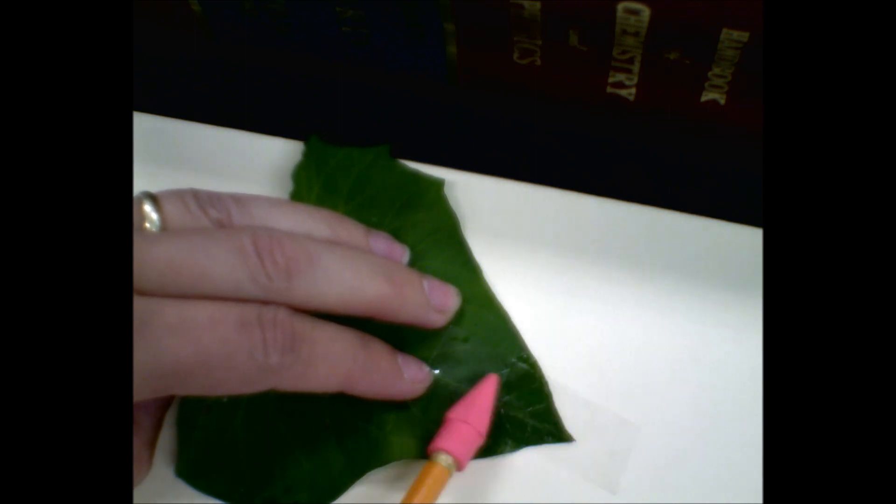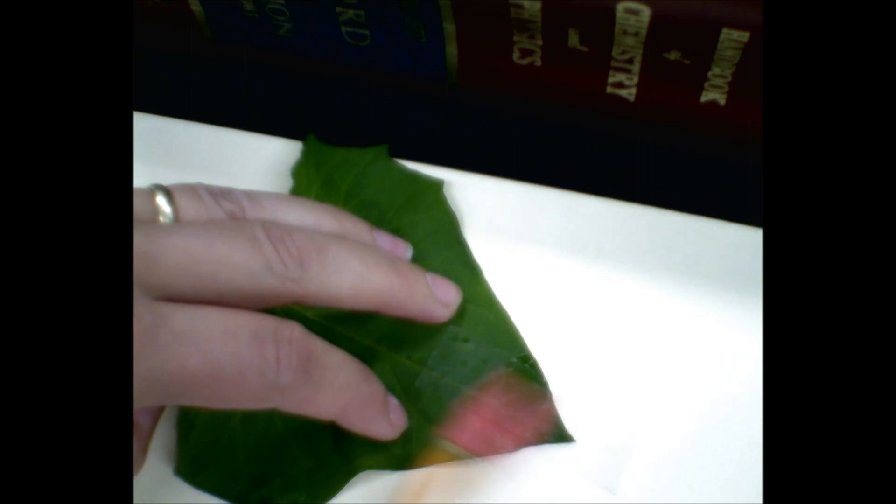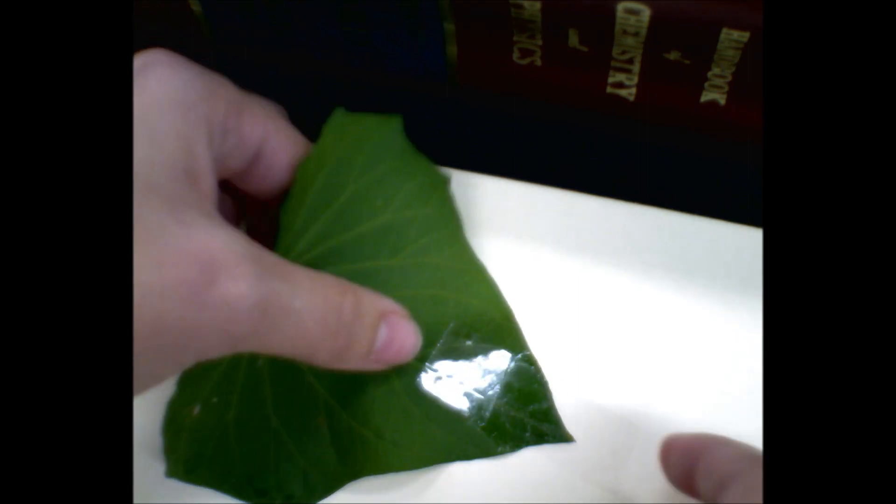You want to make sure you get good contact between the tape and the leaf that you've painted over with clear fingernail polish, because our goal is to lift the clear fingernail polish off of the leaf.